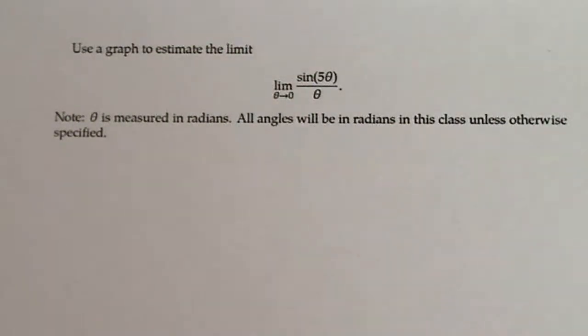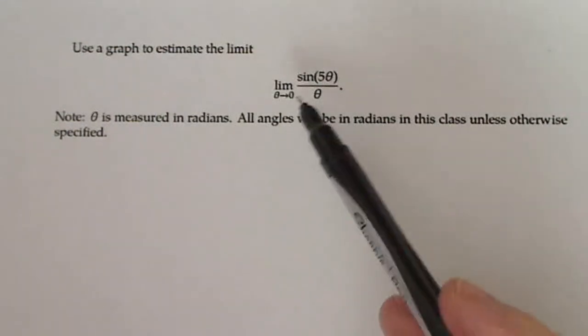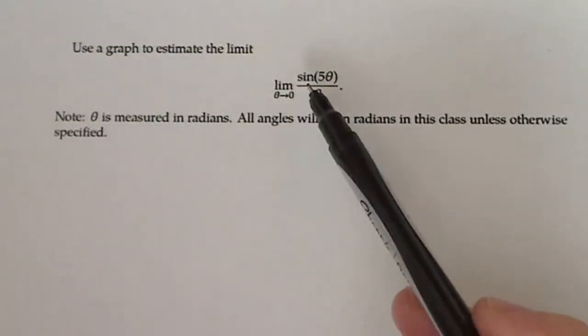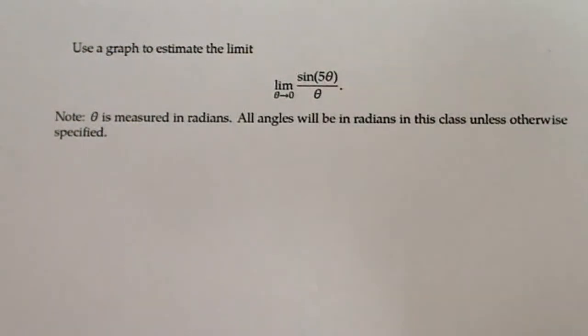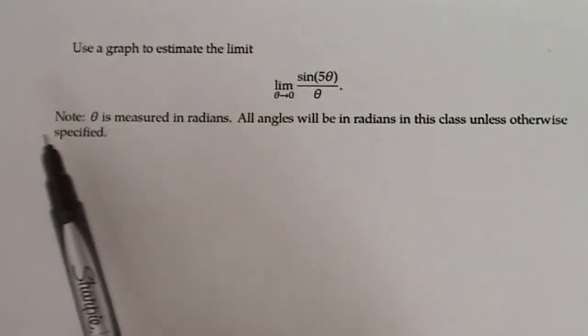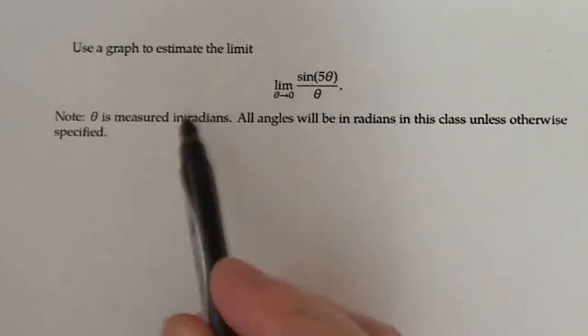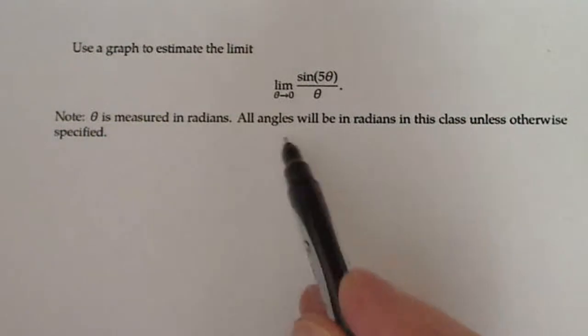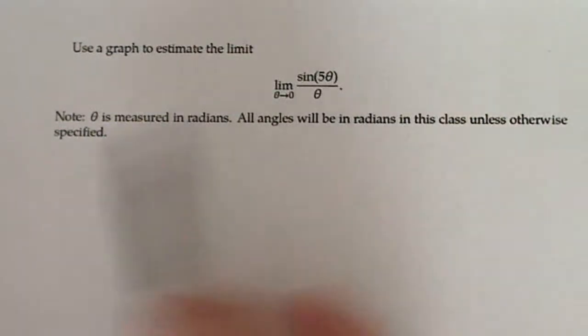So we're going to use a graph here to estimate the limit as theta tends towards zero of sine of five theta over theta. Now this is pretty important. Theta is measured in radians. All angles will be in radians in this class unless otherwise specified. And that's true always. Usually everything once you learn radians is in terms of radians unless the problem specifically states you're using another unit of measure.